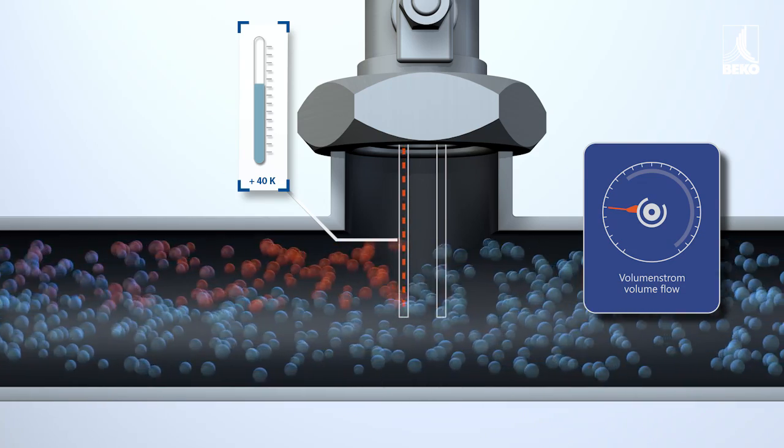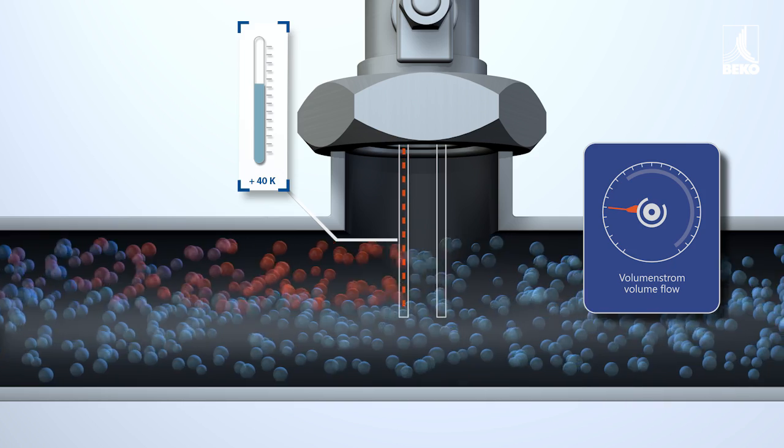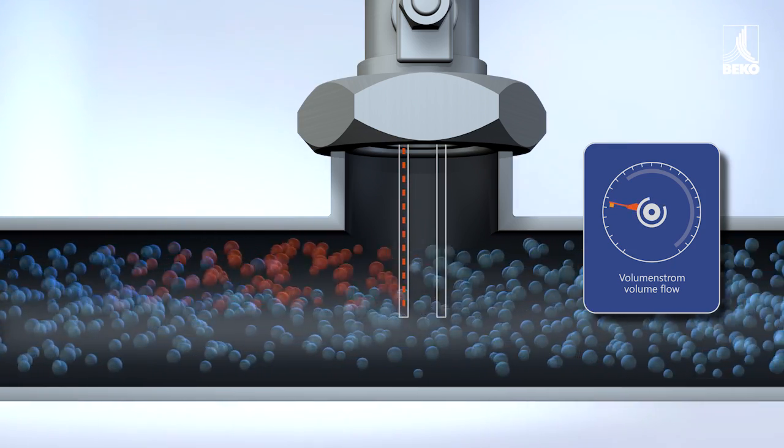As the mass flow increases, it would normally cool, but an electric heating element prevents that from occurring.